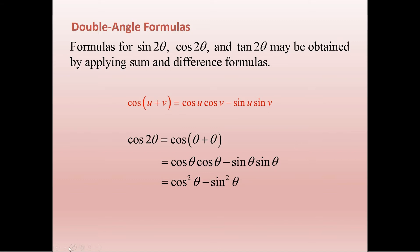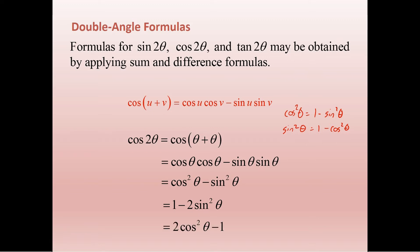Using the Pythagorean identities, cosine squared theta equals 1 minus sine squared theta. So cosine 2 theta can also be written as 1 minus sine squared minus sine squared, or 1 minus 2 sine squared. Or, since sine squared equals 1 minus cosine squared, we get cosine squared minus (1 minus cosine squared), which is 2 cosine squared theta minus 1. These three forms can be used depending on what you need.